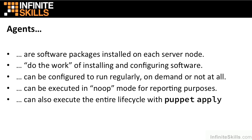A Puppet Agent can also execute the entire Puppet lifecycle locally using a command called Puppet Apply. When running Puppet Apply on a system — which is an example we'll see later on in this video series — the agent will read a configuration file, compile a catalog, and apply changes to a local system. This type of system is called Masterless Puppet and can be used in either a one-off development environment, as we'll see throughout this video series.